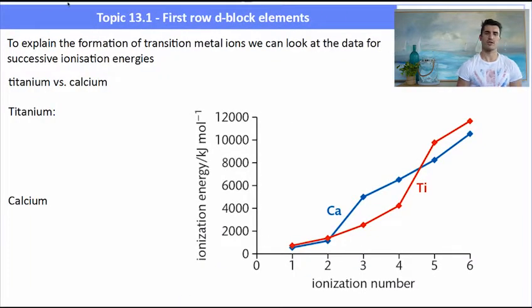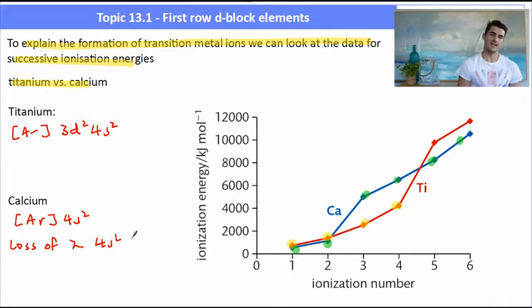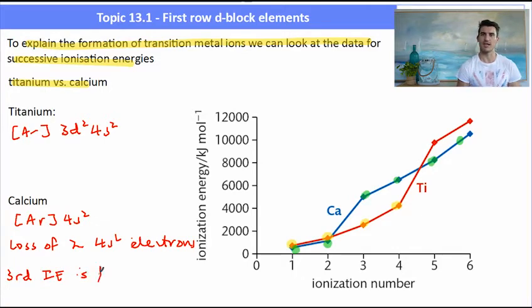If we are asked to explain the formation of transition metal ions we can look at the successive ionization energies. So here I have a graph of the ionization energies of calcium and titanium. Titanium a transition metal, calcium not a transition metal. We can see that the trend for ionization energies of titanium increases until the fourth ionization and then rises steeply. For calcium we have 2 ionizations which are fairly low and then a large jump in the ionization energy. If we look at the electron configurations, argon has the 3d2 4s2 and calcium has the argon 4s2. So if we are to try and lose 2 electrons from calcium we take both of those out of the 4th shell but then the third ionization would be coming from the 3p subshell. The 3p has a lot larger energy than a 4s so it is going to be a lot harder to remove an electron from the 3p.